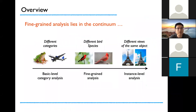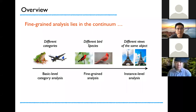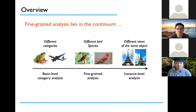Fine-grained visual analysis focuses on dealing with objects belonging to multiple subordinate categories of the same meta category — for example, the different species of birds, different models of cars, stock keeping units of products, or actions of gymnastics. As illustrated in the figure, fine-grained image analysis lies in the continuum between the basic level category analysis and the instance level analysis. The basic level category analysis is also called generic image analysis, and the instance level analysis is also called identification of individuals.